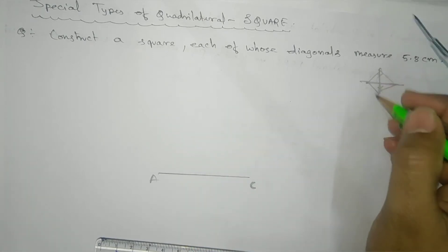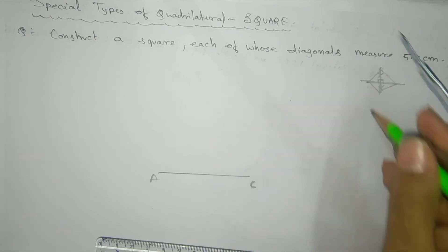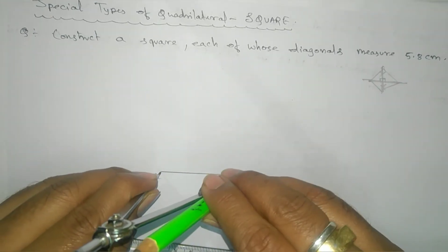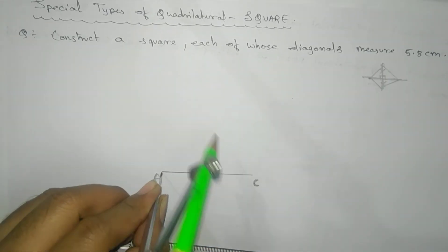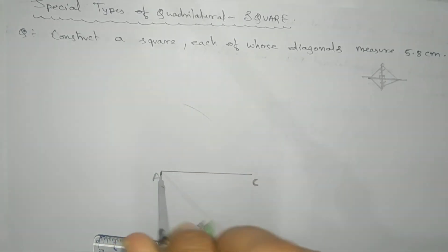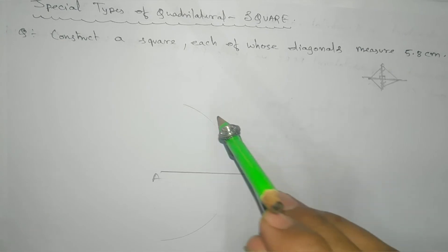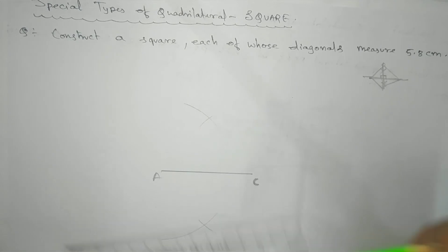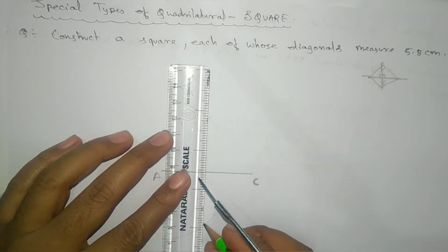We know that diagonals bisect each other at 90 degrees, so we need a perpendicular bisector. How are we going to get it? Take more than half the length, cut an arc from this side and from this side. Same thing without changing, take C and get the intersecting points. Join them and extend it. This is your another diagonal.